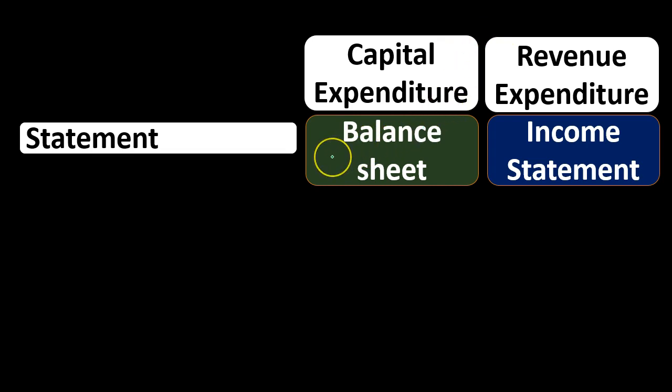The difference would be: if we capitalize the expenditure — something like putting a whole new engine in the forklift — it would go on the balance sheet. Whereas if we did routine maintenance on the forklift, we would put it on the income statement. There's always going to be some question in terms of how much repairs and maintenance should go on the balance sheet versus how much should just be expensed at the time of purchase.